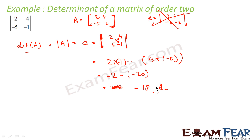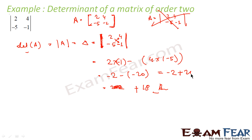The answer is plus 18. To clarify: 2×(−1) = −2, and minus of (4×(−5)) = minus of (−20) = +20. So −2 + 20 = 18. That is the determinant.